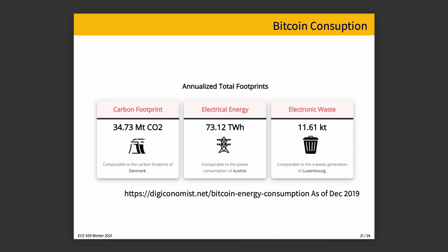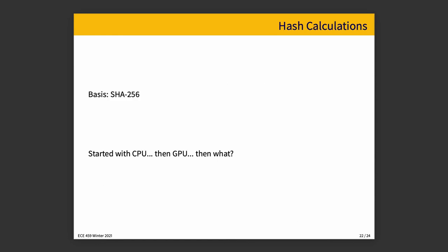Bitcoin runs on an energy-intensive network and that is a significant problem. To give a brief history: to mine Bitcoin, it's done using hash computations — notably SHA-256. In the beginning it was reasonably easy to do, and difficulty increases with time. At first you could do it with CPU, but CPU quickly became inefficient for this purpose, so people started using the GPU.